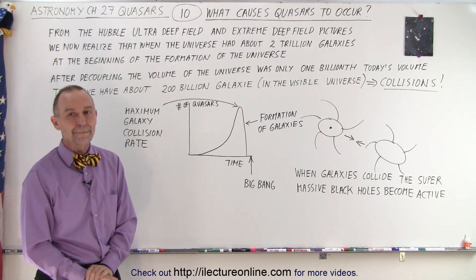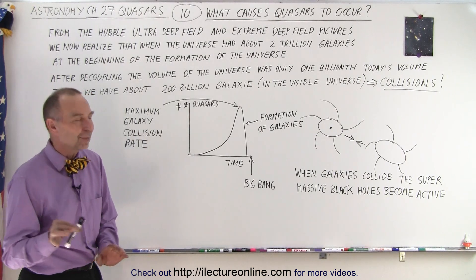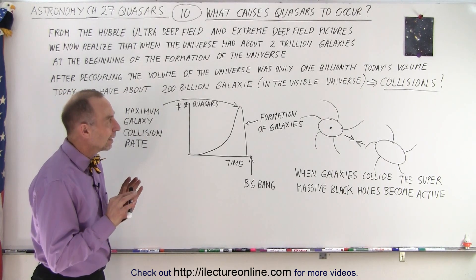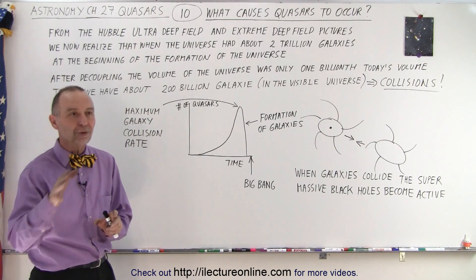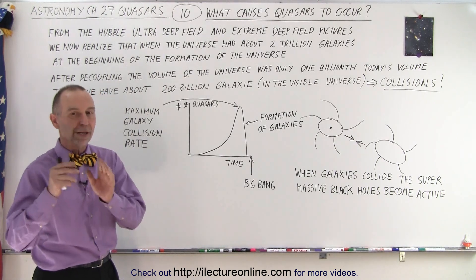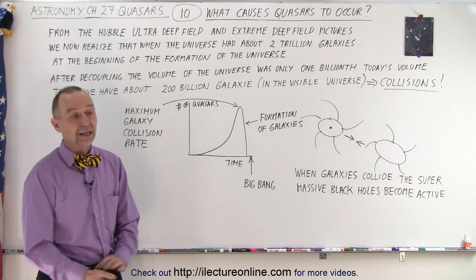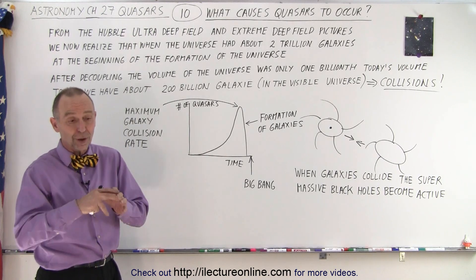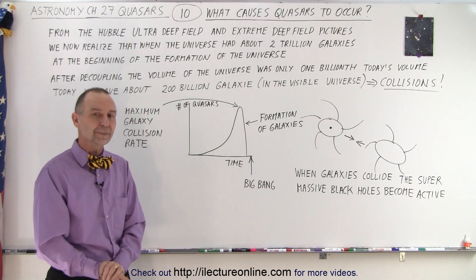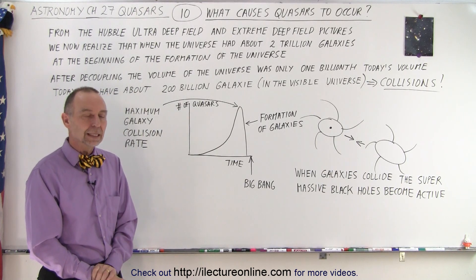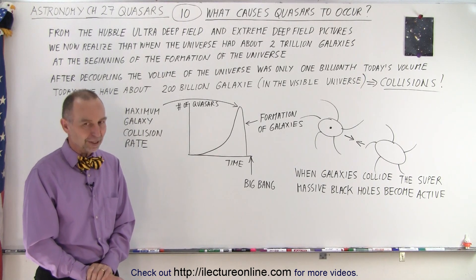A correction on galaxy counts: it was 2 trillion galaxies in the beginning, not 200 trillion — that was a mistake. Now it's down to about 200 billion galaxies. So it went from about 2 trillion to about 200 billion over the last 13 billion years. Where did the missing ones go? They collided and joined together, which is why today we have many large galaxies, whereas back then most were small. As for the Andromeda collision, the estimate is about one to one and a half billion years from now, so don't stay up for it.